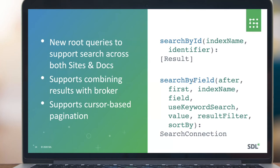GraphQL is our new API of choice introduced in Sites 9.0 and the DXD 11.0 release, and this is where we're moving most of our APIs going forward. As a result, we have added some new root queries to our GraphQL endpoint that allow you to access the search interface. You can see some of the root queries on the right: a basic one that lets you get a specific item from the index, and then a field search that allows you to provide a single field for your search and get the results back.